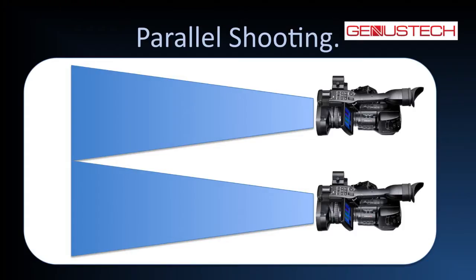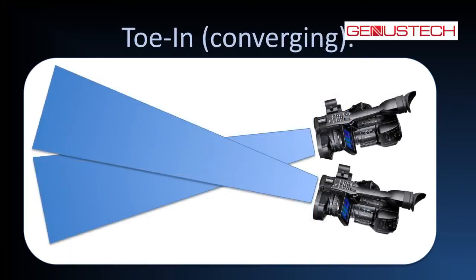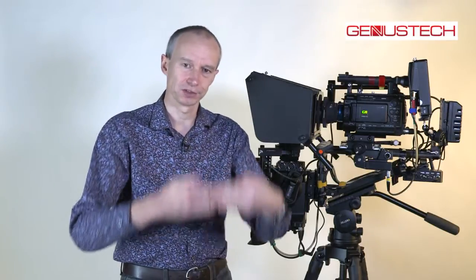So how do we shoot 3D? There are two principal ways of shooting 3D: parallel and converged. Parallel, as the name implies, means that the cameras always remain parallel to each other. And with converged shooting, the cameras are actually pointed at the subject of interest, or at least pointed at the subject that will appear to be on the screen plane — remembering that the screen plane is the surface of the screen.